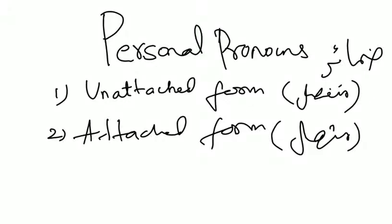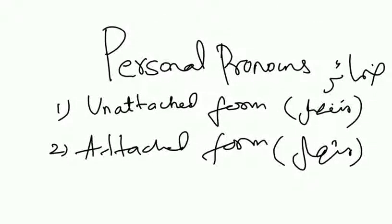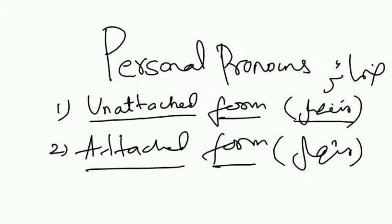Bismillah ar-Rahman ar-Rahim. In this clip, I am going to show you the Zamaayr and its classification. Zamaayr are those words which indicate the speaker — that is Mutakallim — or second person Hazir and third person Raib. As you have seen in the last mini-clips regarding the Mutakallim, Hazir and Raib, we now come up with a new topic called Zamaayr, which is broadly classified into two types: a detached form, that is Munfasil, and an attached form, that is Mutasil.